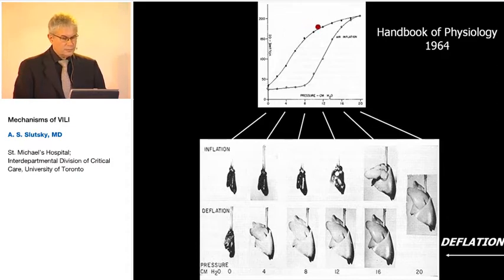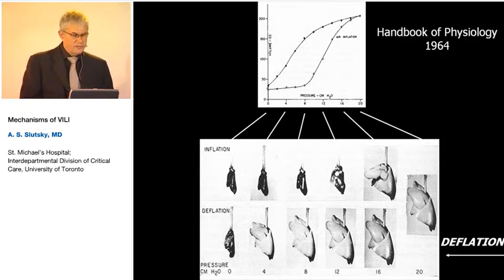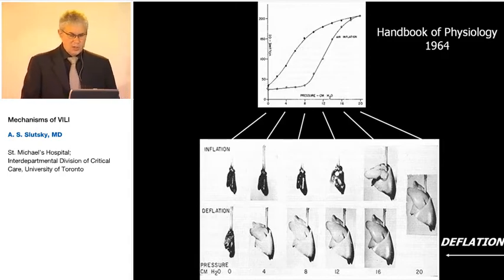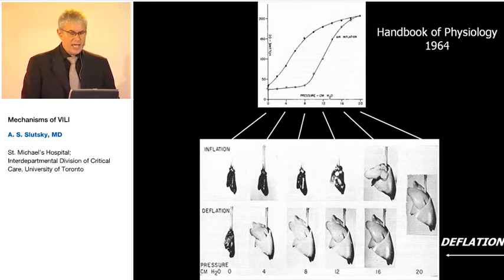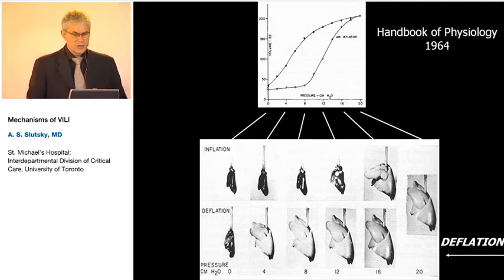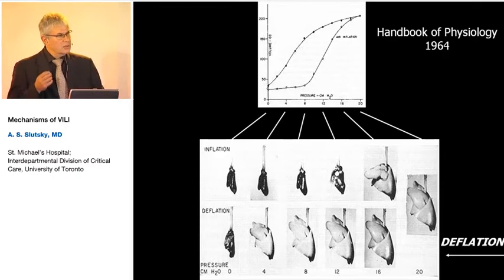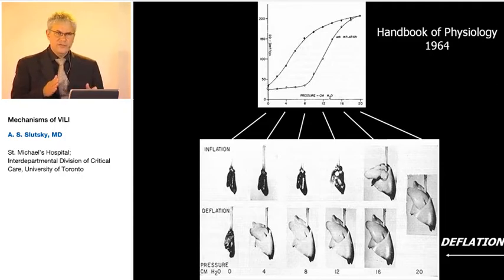A couple of important points from this pressure-volume picture: first, being above the lower inflection point does not mean the lung is homogeneously or fully inflated — it's not until well up on the pressure-volume curve that the lung is reasonably fully inflated. Second, you can see the effect of a recruitment maneuver: if you go up close to total lung capacity and then come down, the lung is much more homogeneously inflated even at the same pressure. Third, this gives you a good feel for what hysteresis means clinically. Each inflation shown was a static inflation — gas was instilled and held for a few seconds.